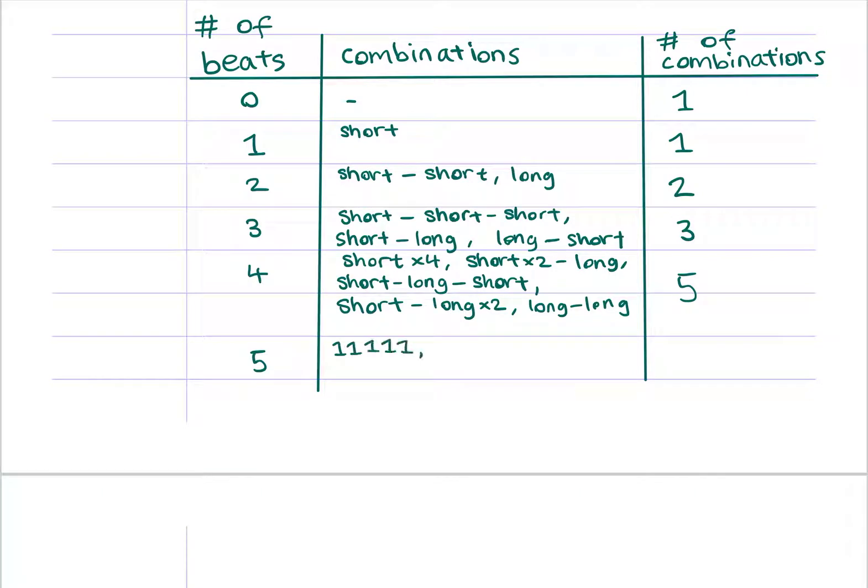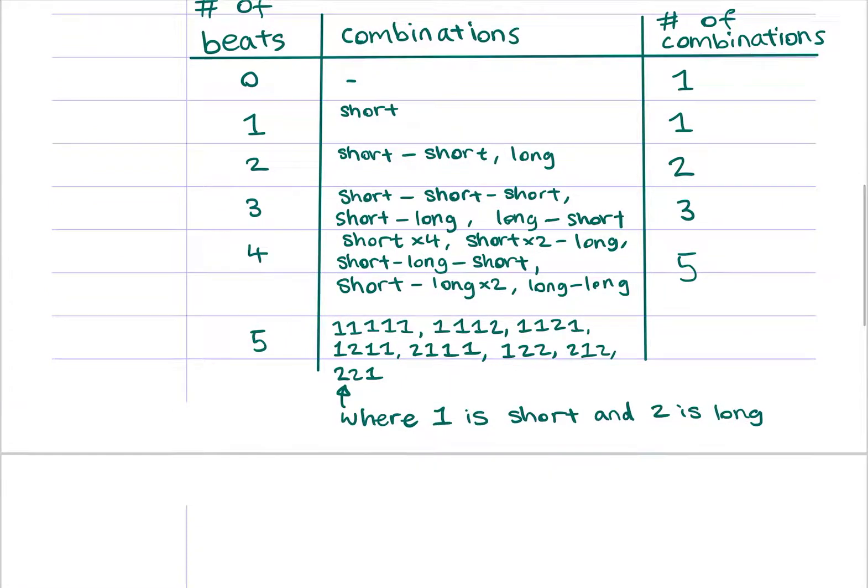Please note that a one represents a short, and a two represents a long. By now, most of you probably recognize this pattern. One, one, two, three, five, eight.